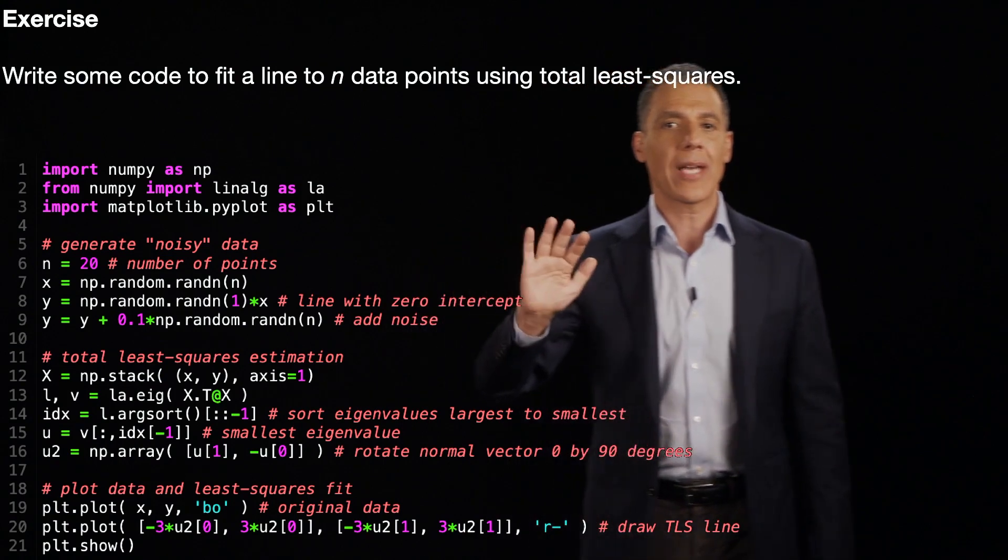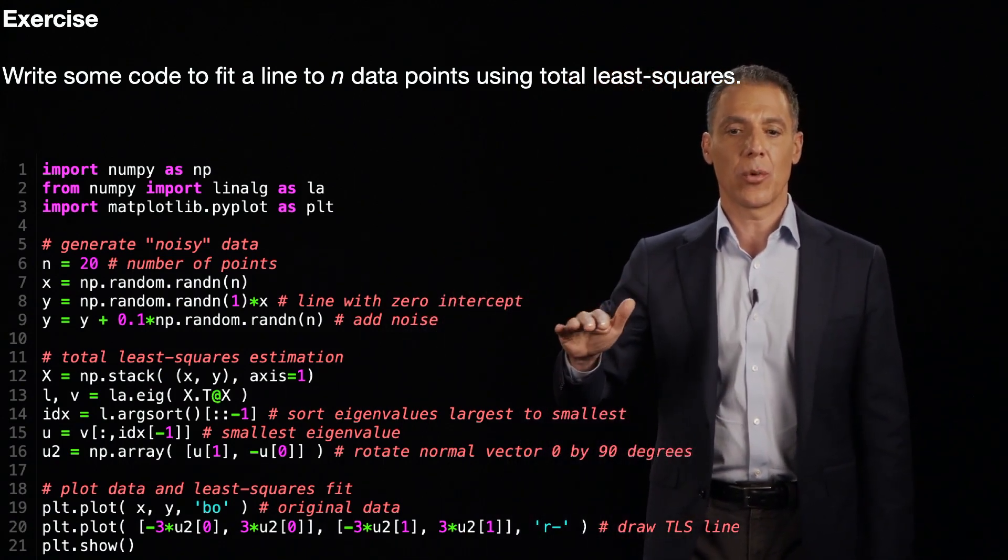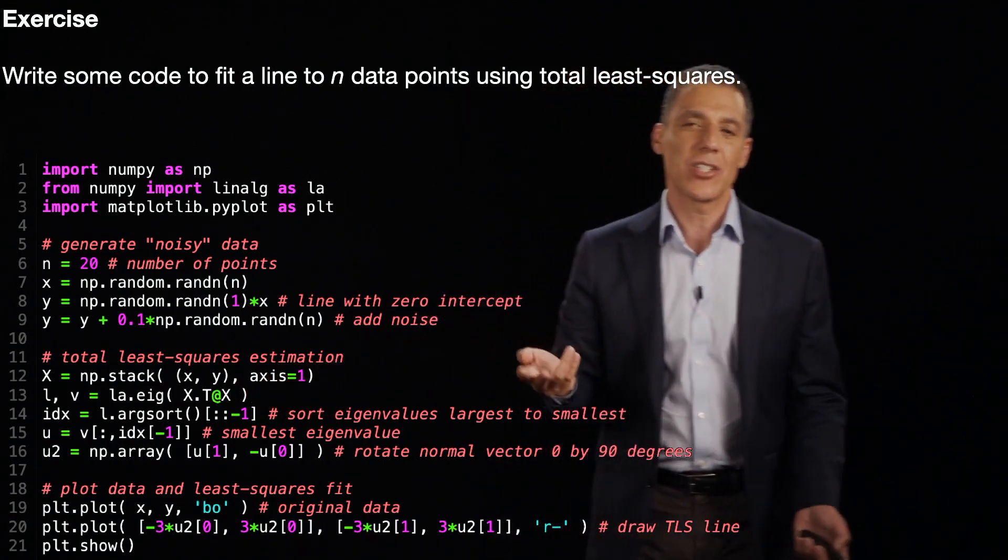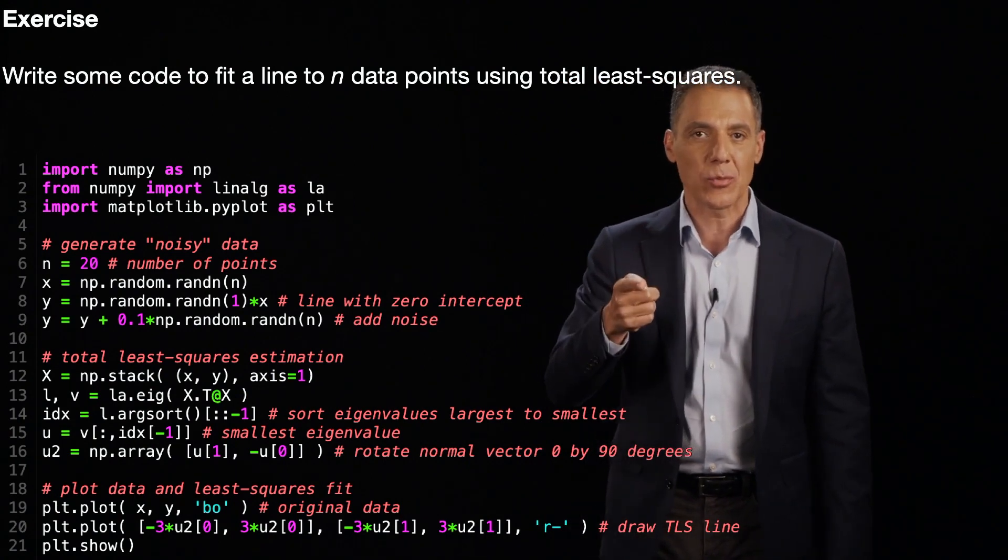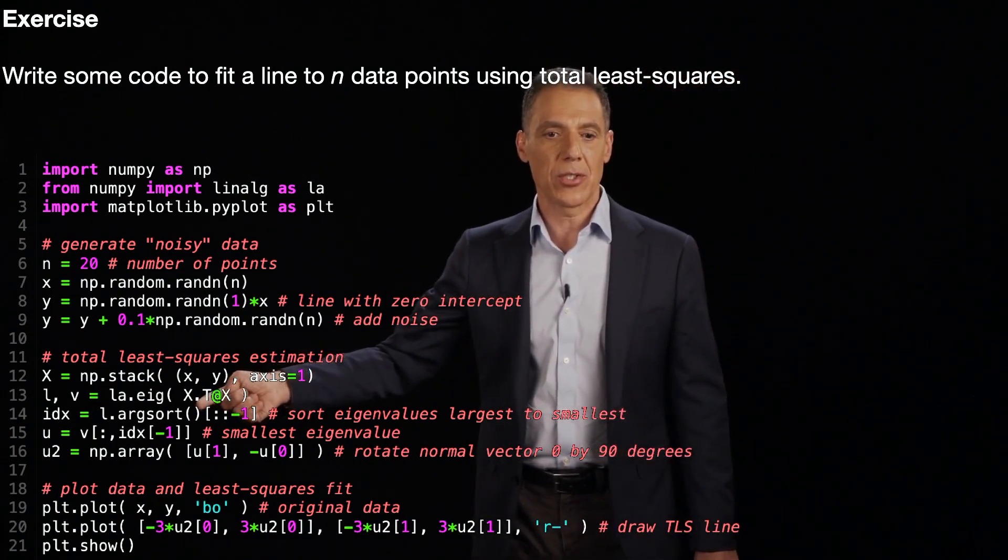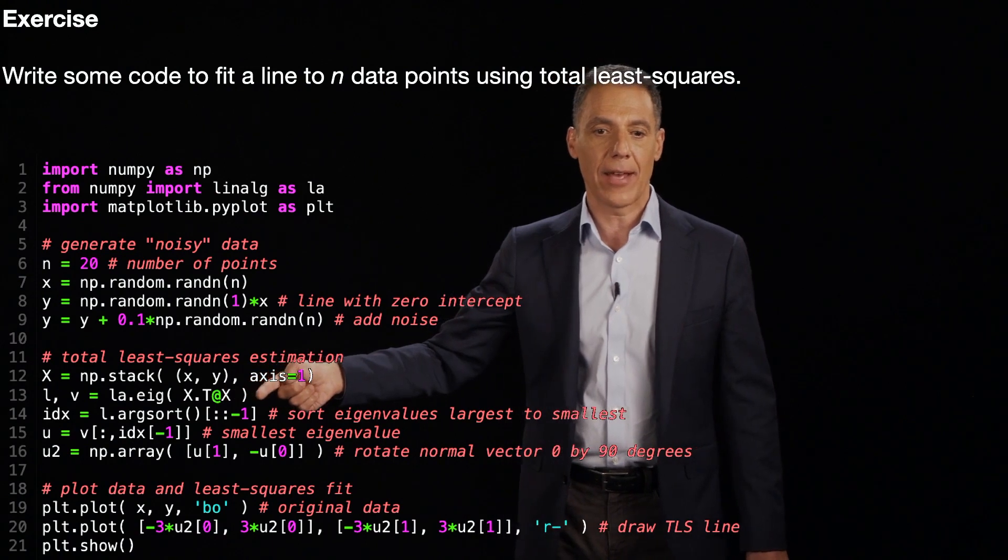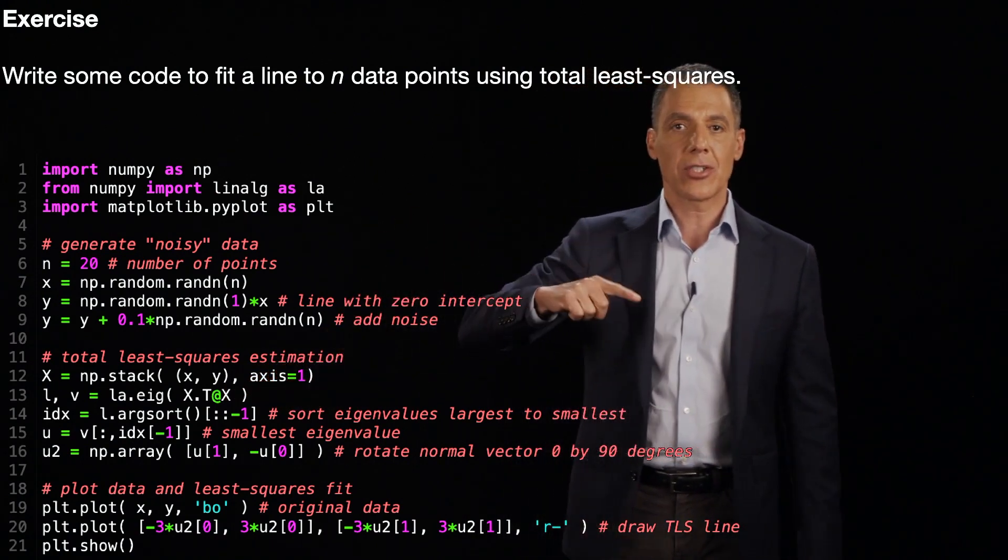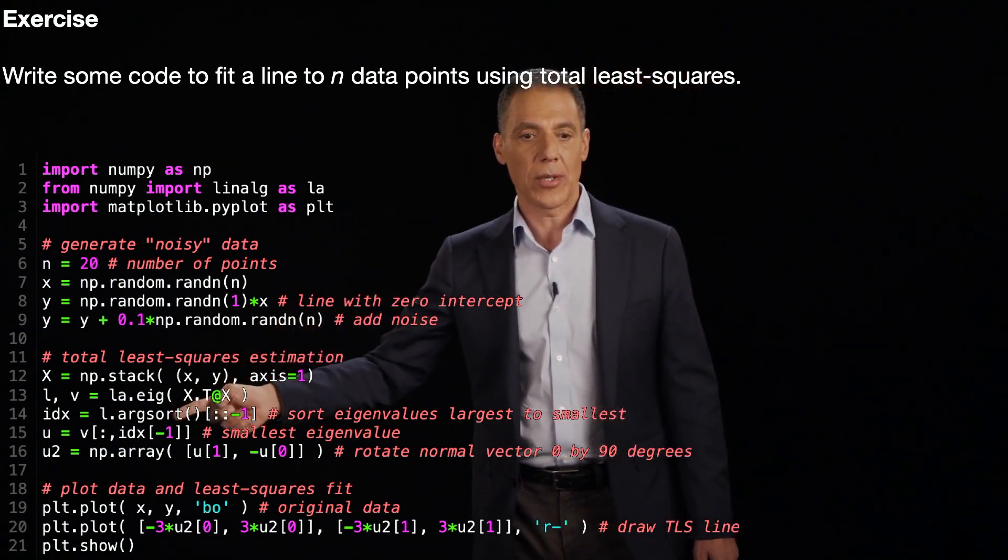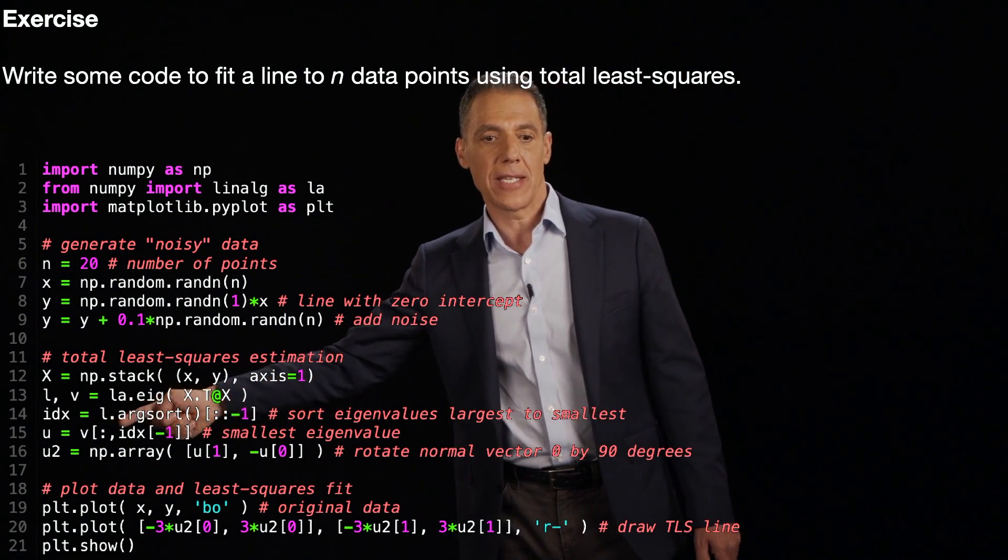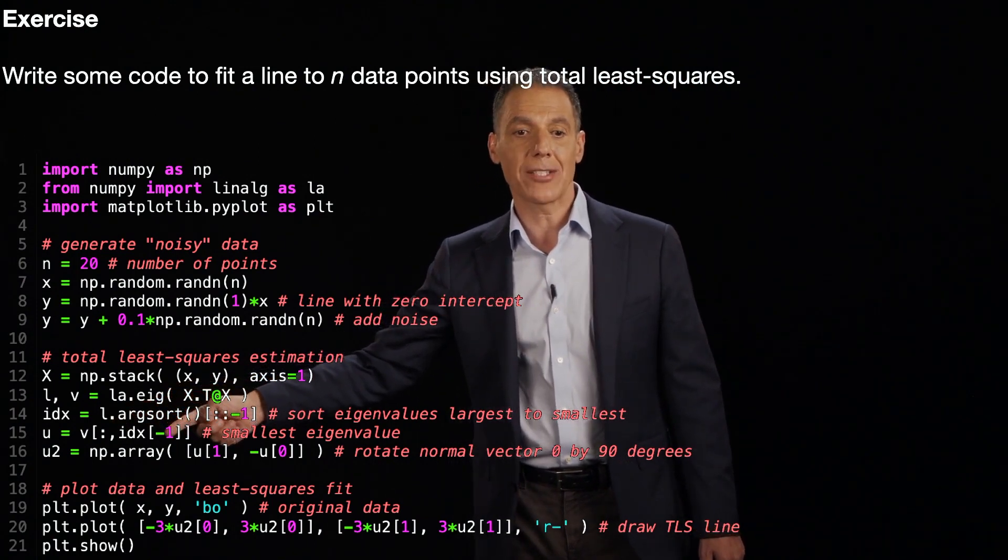And as I said before, don't count on these things being in sorted order. And so, I mean, in this case, it was only 2 by 2. So you could have just checked which one it is. But here what I'm going to do is I'm going to sort L, which are the eigenvalues, from largest to smallest. And then I'm going to take the eigenvector V associated with the smallest eigenvalue, the last element in the index.